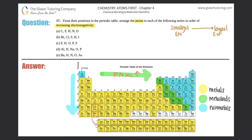Fluorine is actually the highest electronegative atom. As we go down a group, electronegativity decreases — less and less. We have to take that in mind and rank these five from smallest electronegativity to highest.